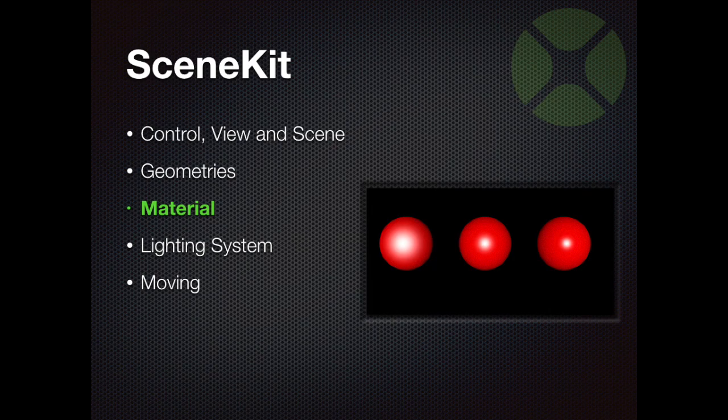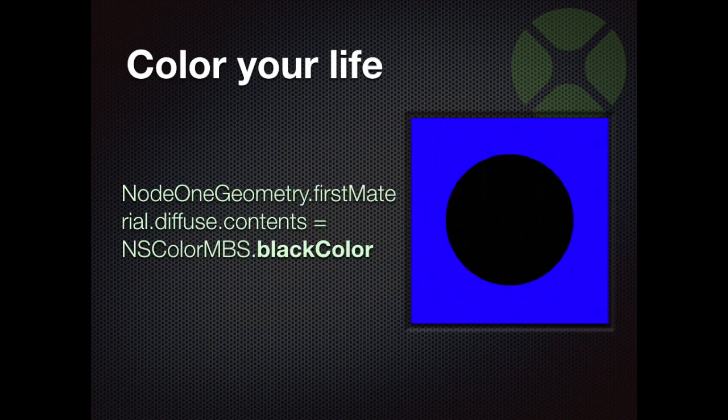Then we come to the category material. The category material is about color and the surface structure. The material is essential for the look of an animation because there's a big difference between the look of a sparkling metal ball and a rough stone ball, even though they have the same shape and size. I want to show you some of the possibilities to model material. At first we start with colors.